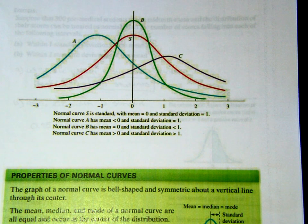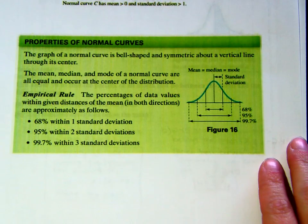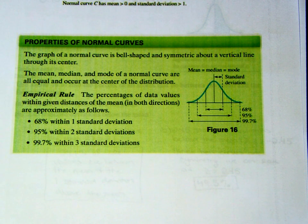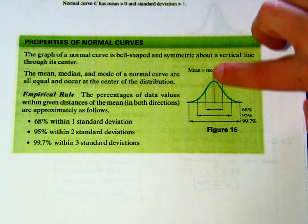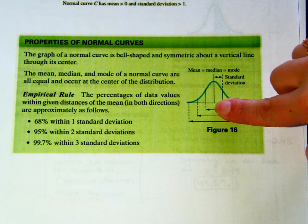Here's the key information. The graph of a normal curve is bell-shaped and symmetric about the vertical line through its center. Something interesting: the mean, median, and mode on a normal curve are all the exact same value — and they occur right at that middle line. The middle line that cuts our bell curve in half is our mean, median, and mode. That will be given to you in the problems.